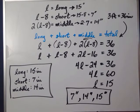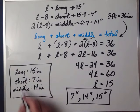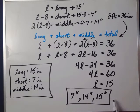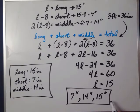To check: go back to the statement of the problem. The middle piece is twice as long as the short — 14 is twice 7, yes. The short is 8 inches shorter than the longest — 15 minus 8 is 7, yes. And the critical check: does it total 36 inches? 15 plus 7 plus 14 equals 36 inches. That checks. Be sure to put a box only around what you've been asked to find. If you box L equals 15, I'll take off points — you were asked for all three piece lengths.